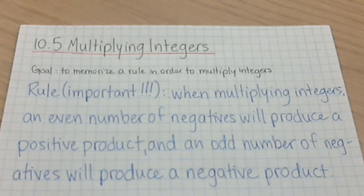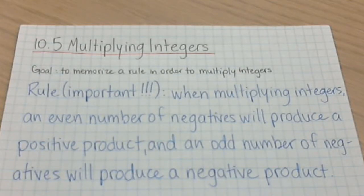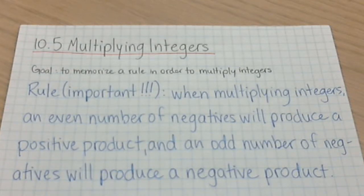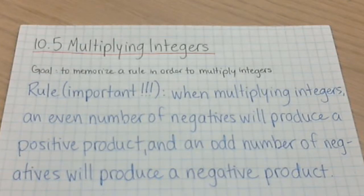Plain and simple. So if you have one negative sign, three negative signs, five negative signs, or other odd numbers, your product is going to be negative. If you have an even number — like two, four, six, eight, ten, all the way up — your answer's going to be positive. Plain and simple.